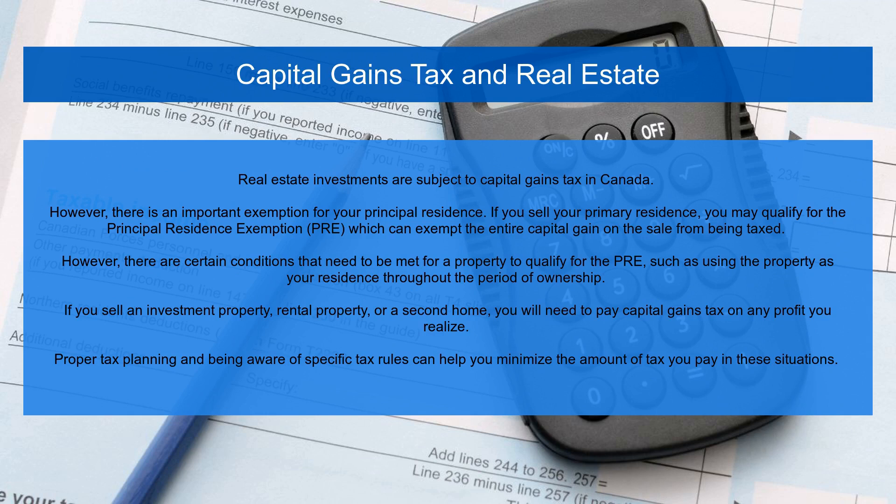Real estate investments are subject to capital gains tax in Canada. However, there is an important exemption for your principal residence. If you sell your primary residence, you may qualify for the Principal Residence Exemption (PRE), which can exempt the entire capital gain on the sale from being taxed. However, there are certain conditions that need to be met, such as using the property as your residence throughout the period of ownership.